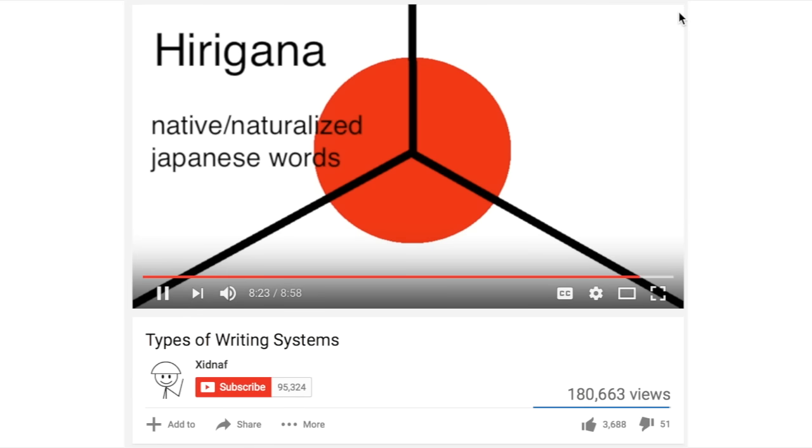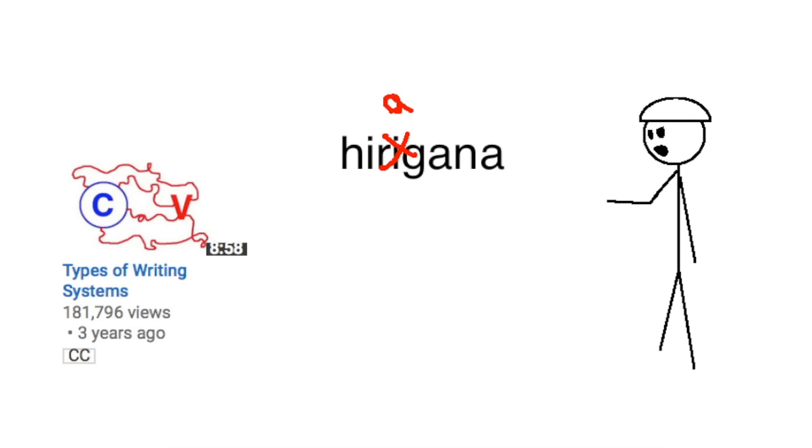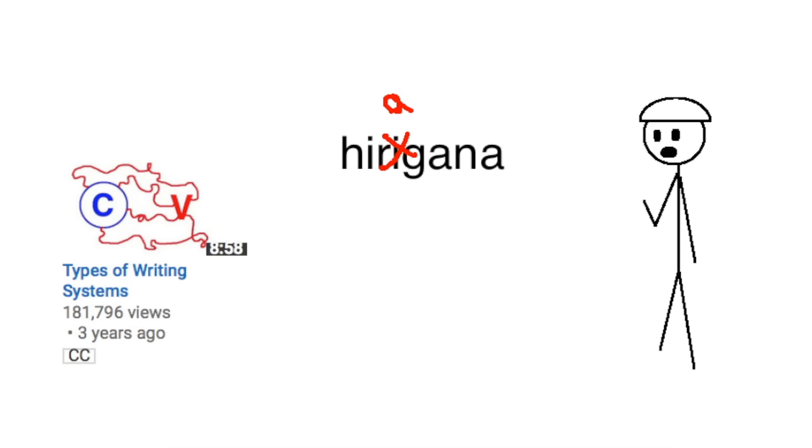For native or naturalized Japanese words, it uses hirigana. No, it uses hiragana. Wait, is that all? I could have sworn there were more. Well, there's probably more I just forgot about.